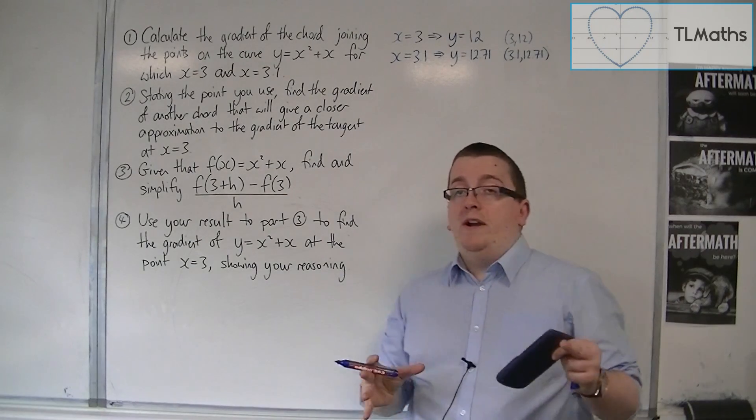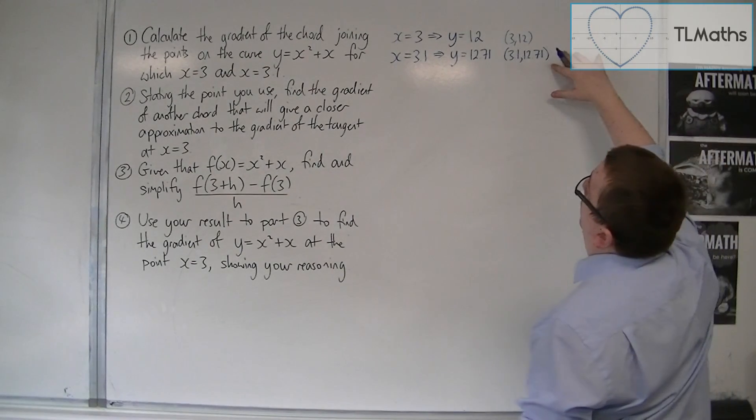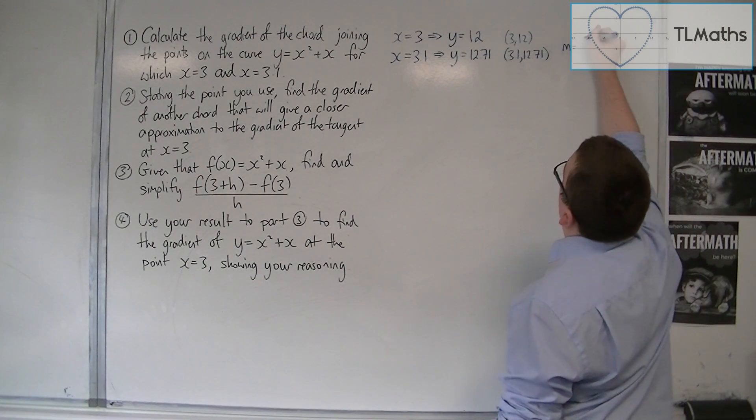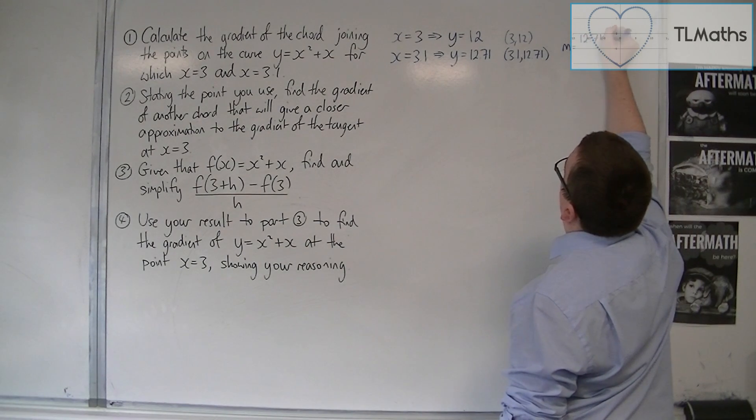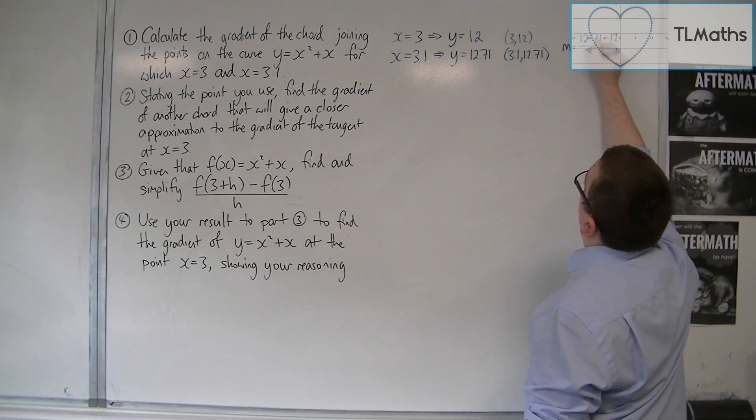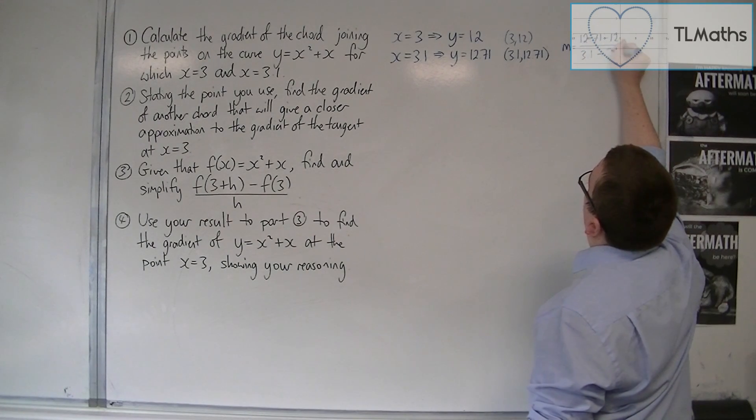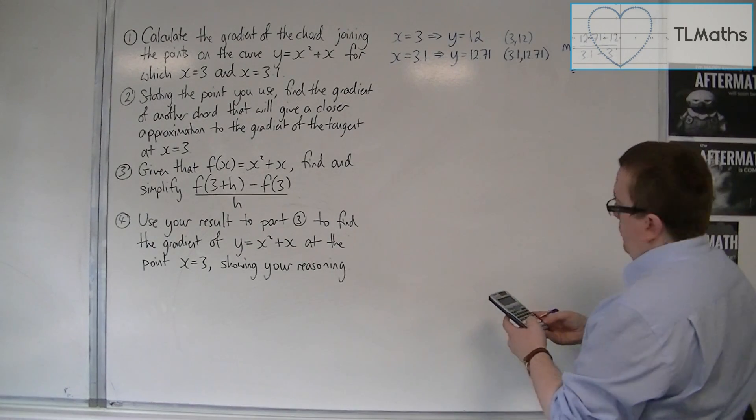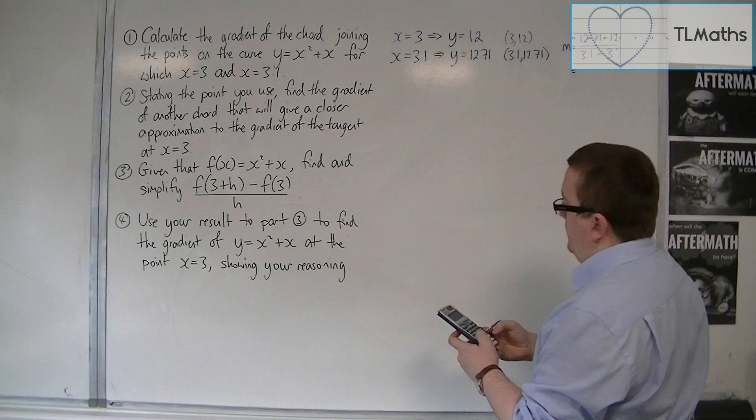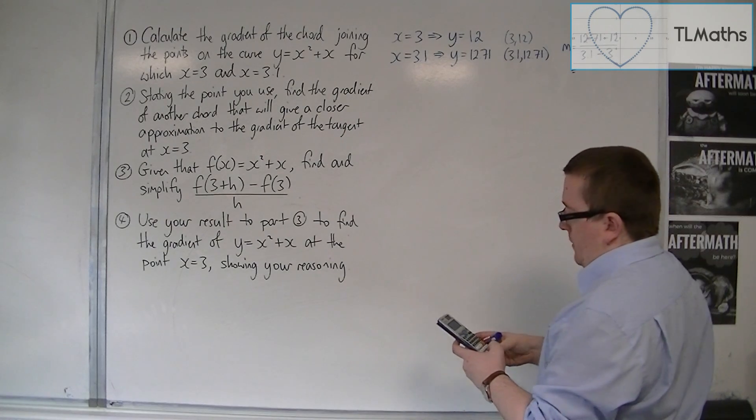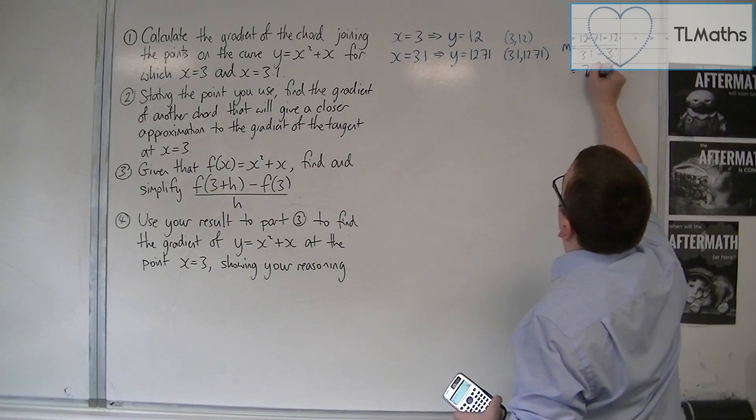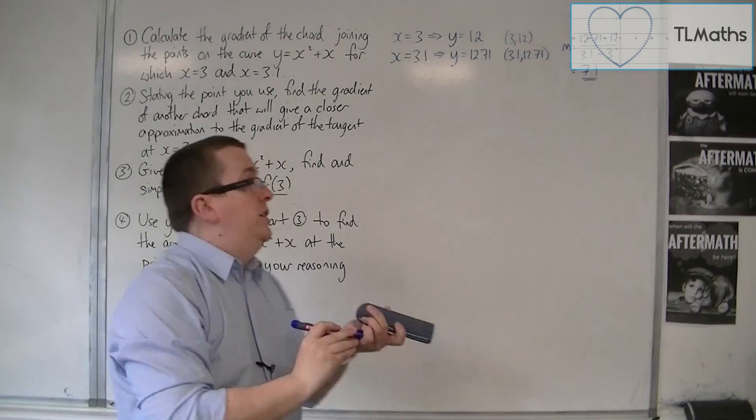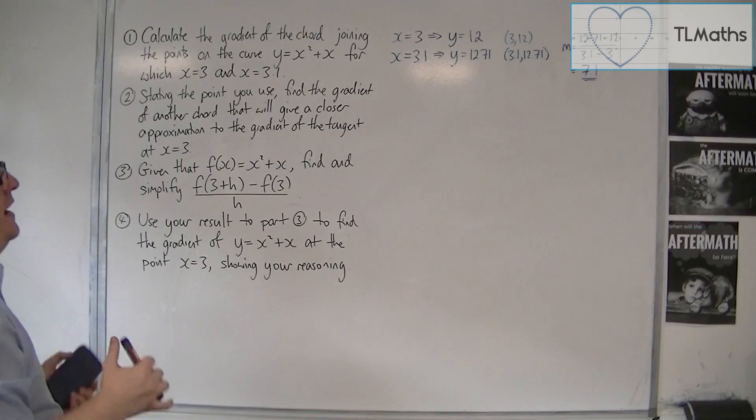So now we need to find the gradient between these two points. So m is equal to the difference in the y-coordinates divided by the difference in the x-coordinates. So we're going to have 0.71 in the numerator and 0.1 in the denominator, and so we'd have 7.1. That would be the gradient of that chord.